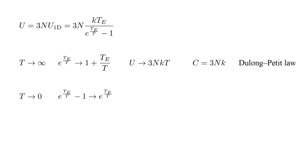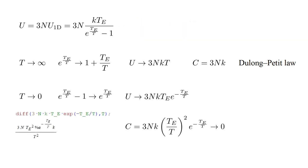Now let's look at the low temperature limit, T goes to zero. In this case, T_E over T goes to infinity. Since e to a very large exponent is a huge number, the denominator, e to the T_E over T minus one, is essentially just e to the T_E over T. Writing one over e to the T_E over T as e to the minus T_E over T, we find U goes to three N k T_E e to the minus T_E over T. The slope or derivative of this function can be calculated with a computer algebra tool. We find a heat capacity of three N k quantity T_E over T squared e to the minus T_E over T. This goes to zero as T goes to zero.